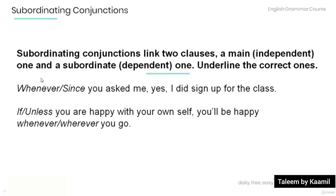And now let's review and practice a bit. Remember, subordinating conjunctions link two clauses: a main independent one and a subordinate or dependent one. Now read the following sentences and underline the correct conjunctions. First: 'Since you asked me, yes, I did sign up for the class.' Second: 'Since you are happy with your own self, you'll be happy wherever you go.'